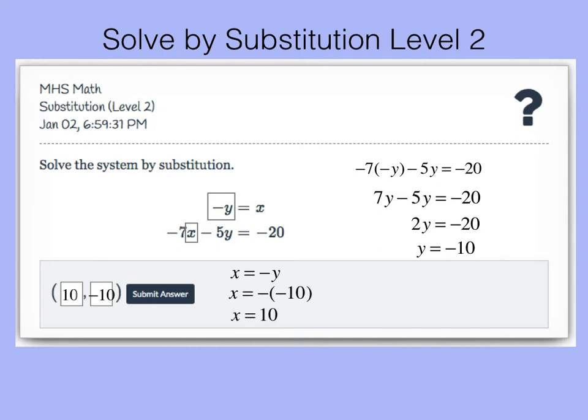That is the x coordinate of my solution. So the solution to this system of equations is 10 negative 10. And just to review for level 2 of Delta Math you're going to be looking in one of the two equations as x equals something or y equals something. And that's what we use to substitute into the second equation. So we'll go on to level 3 now.